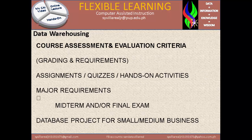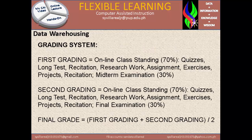Now let's proceed to the course assessment and evaluation criteria. Grading requirements include assignments, quizzes, and hands-on activities. Major requirements are midterm and/or final exam and a database project for small to medium business. For the grading system, first grading — online class standing is 70%, which includes quizzes, long tests, research, assignments, exercises, and project. However, recitation is being removed and replaced with case studies.